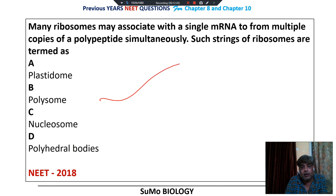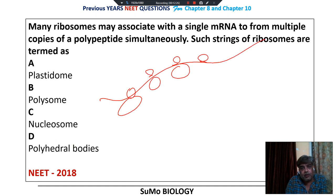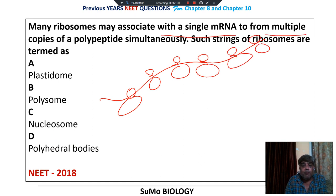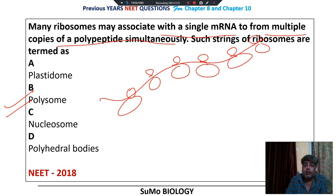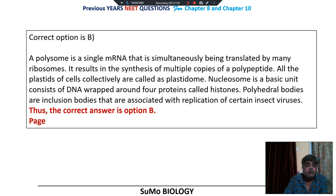Many ribosomes may get associated with a single mRNA to form a polysome or polyribosome. The answer is polysome. This produces multiple copies of the same polypeptide. This is mentioned in your NCERT.